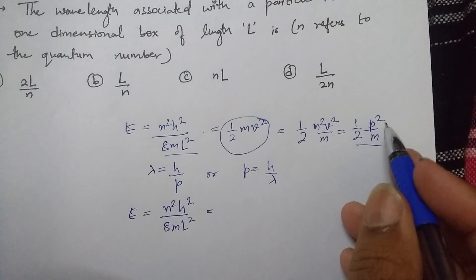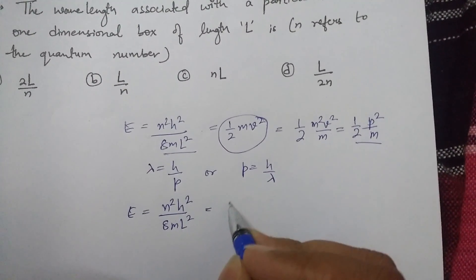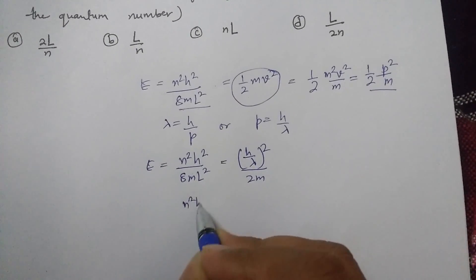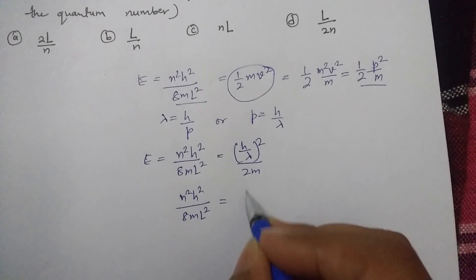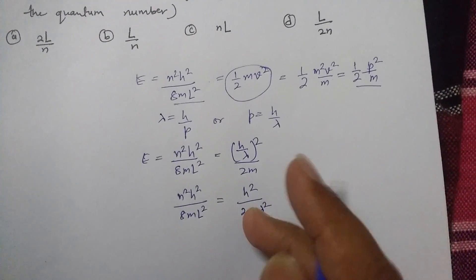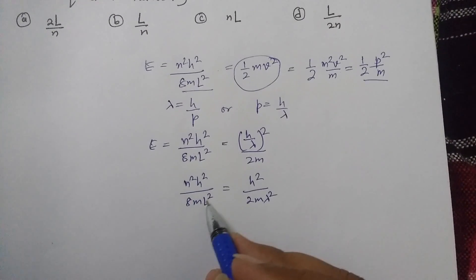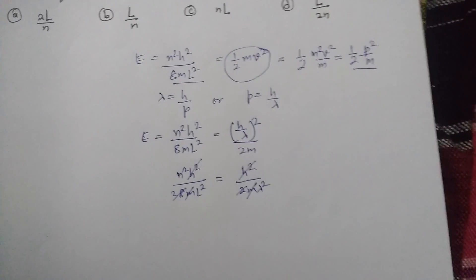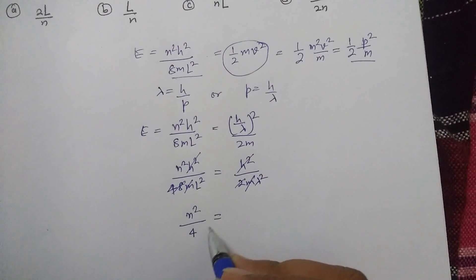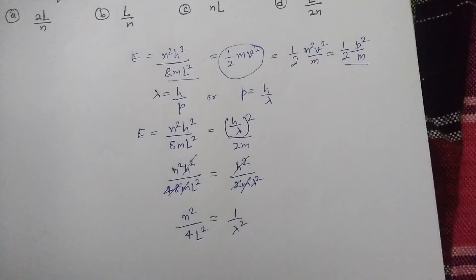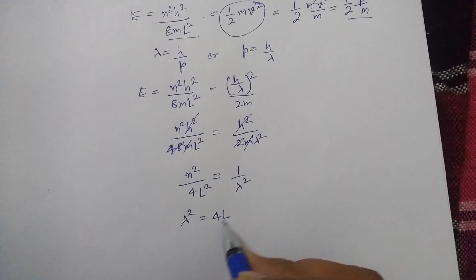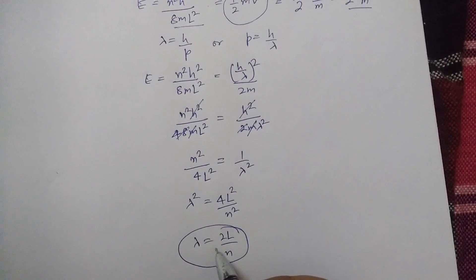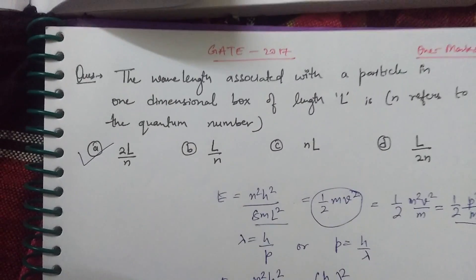Putting in p = h/λ, we get n²h²/(8mL²) = h²/(2mλ²). Cancelling m, h², and the factor of 2 (leaving 4), we get n²/(4L²) = 1/λ², so λ² = 4L²/n², and therefore λ = 2L/n. This is the required answer — option number one.